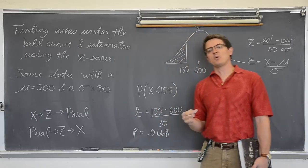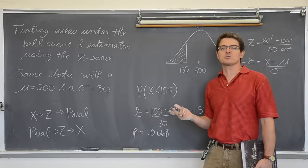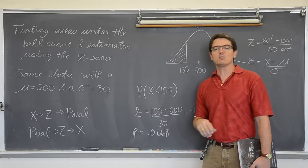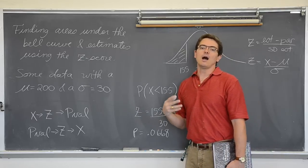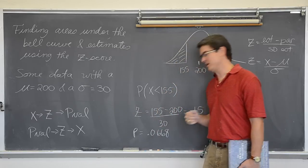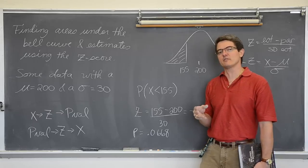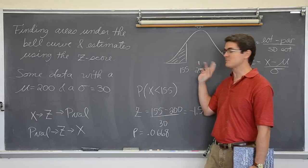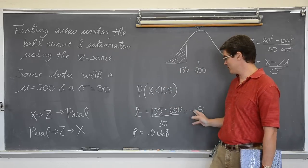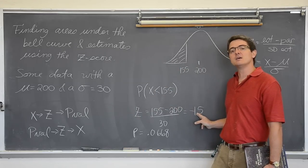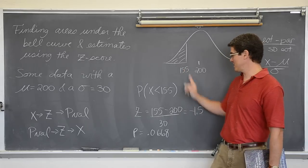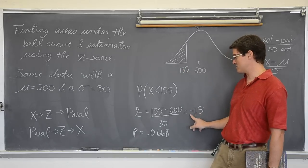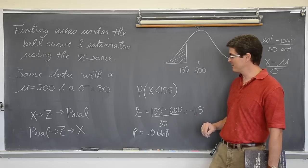That means that roughly 6.7% of my data is less than 155. Or I would have a 6.7% probability of observing a piece of data or observing an observation of less than 155. Don't forget, the unit of z-score is standard deviations. So this is 1.5 standard deviations to the left of the mean.